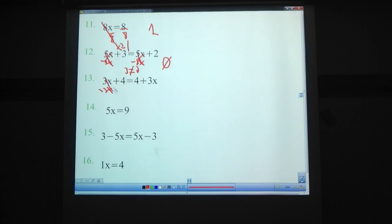13 subtract 3X from each side. Leaving you with 4 equals 4. Those are equal. So there's infinitely many solutions. Number 14 you divide both sides by 5. Giving you X equals 9 fifths, which is one solution.